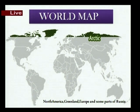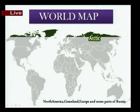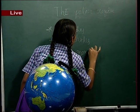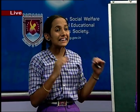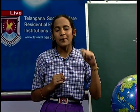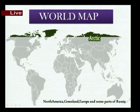Now I am showing the world map showing the north polar region and its surroundings. The shaded part is covered by the polar region. In this region fall some continents like North America, some part of Europe, some part of Russia in Asia, and Greenland also falls in this region.